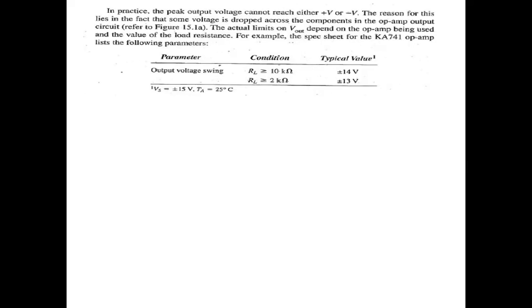If the load resistance is greater than or equal to 10kΩ, and the op-amp is supplied with plus/minus 15V, then the output will be around 14V. If the load resistance is greater than or equal to 2kΩ, then the output voltage is plus/minus 13V. These are different conditions in which we have the maximum value of output voltage.